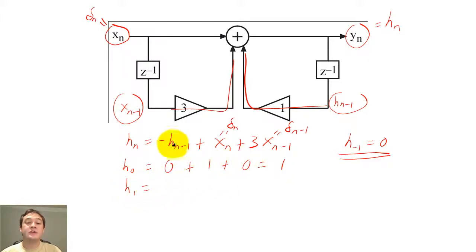h sub 1 equals 2. Since both delta functions will be 0 for n greater than 1, h sub n will simply equal negative h sub n for n greater than 1.